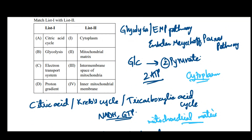So, glycolysis occurs in the cytoplasm. Citric acid cycle or Krebs cycle occurs in the matrix of mitochondria. Electron transport system occurs in the inner mitochondrial membrane.